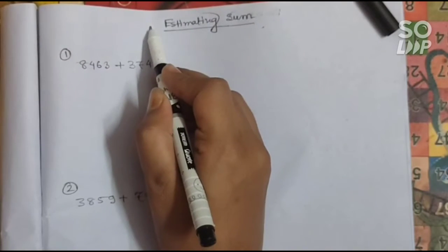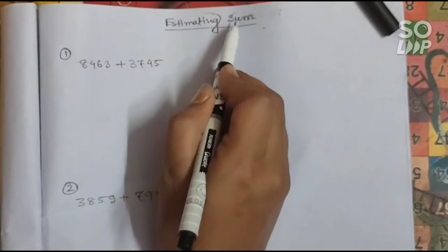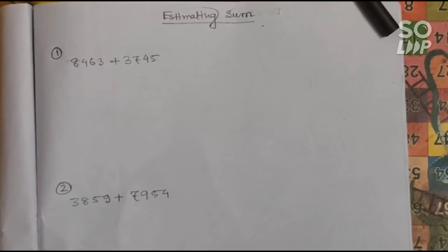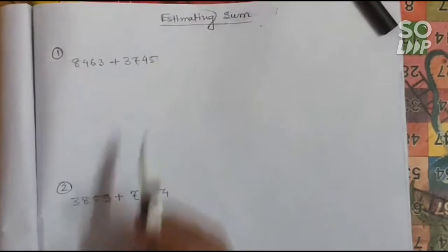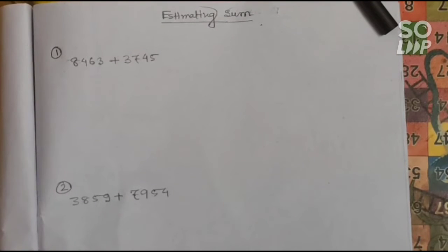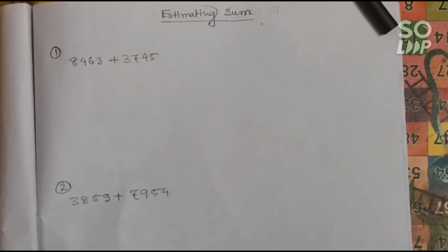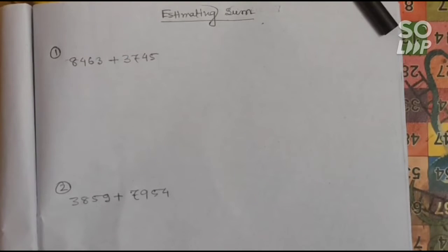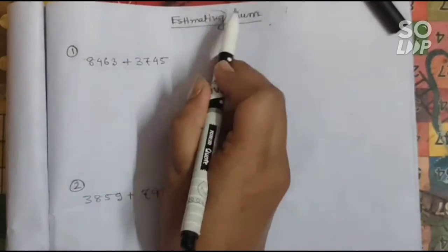Now I will tell you how you can estimate the sum of some numbers — how you can find the total value and estimate it to the nearest tens, nearest hundreds, or nearest thousands. In your previous class you already learned about addition: how to do addition of three-digit numbers, four-digit numbers, or any bigger number with and without carrying. In this class you will learn about estimating sums.